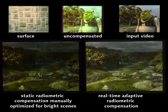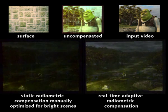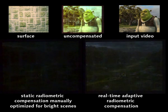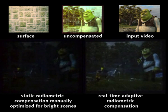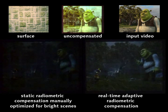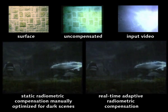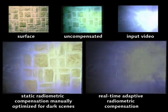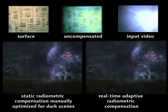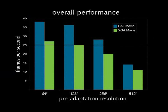Particularly when the presented content varies greatly in brightness and contrast, the adaptive content adjustment generates an improved image quality. We used a Pentium 4 processor with 3GHz together with an NVIDIA GeForce 7900 GTX for performance evaluations. With this setup, content in PAL and XGA resolution can be compensated in real-time.